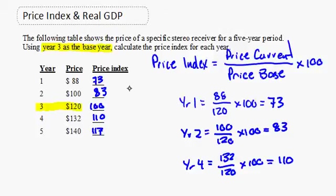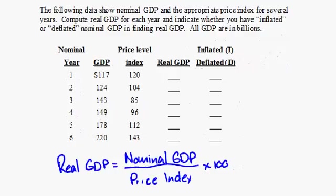Following the same formula, in year five the price index is 117. That gives us a price index for each of the five years for this stereo receiver. Now let's look at a real GDP calculation problem.